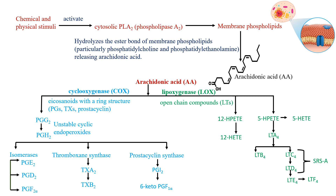LOX also creates compounds called hydroxyeicosatetraenoic acid, or HETE for short. HETEs have various roles including involvement in inflammation and blood vessel regulation. If LOX works on arachidonic acid it gives us leukotrienes — named leukotriene A4, B4, C4, D4, and E4. HETEs also come in different forms like 5-HETE and 12-HETE; these numbers indicate where the action is happening in the structure. We will study the lipoxygenase pathway and leukotrienes in a different chapter and continue here with COX products.